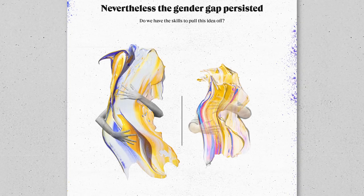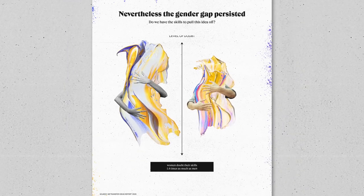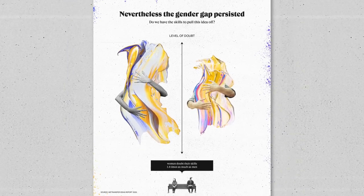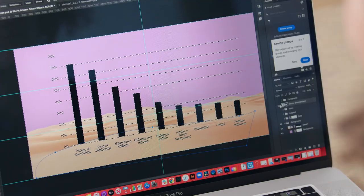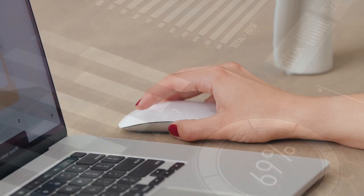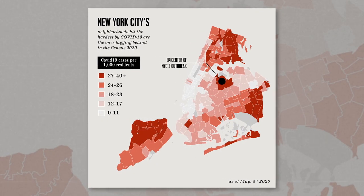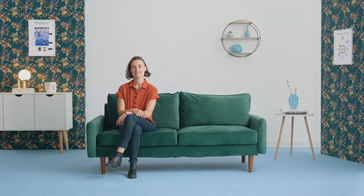By the end of this course, you will have an illustration that is not only informative, but also eye-catching. You will need access to a computer with Illustrator and Photoshop, as well as Excel or any other spreadsheet software. Basic knowledge of these programs would also be helpful. Grab your audience's attention and tell the stories that need to be heard.